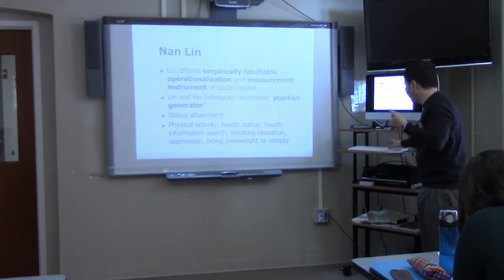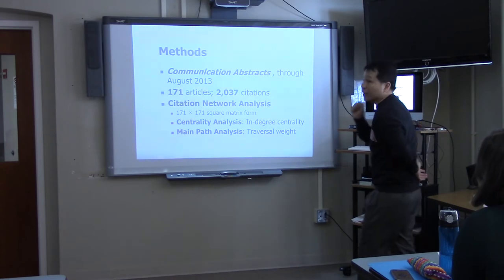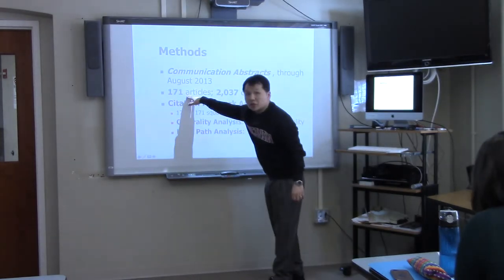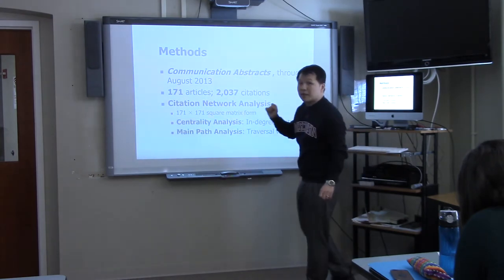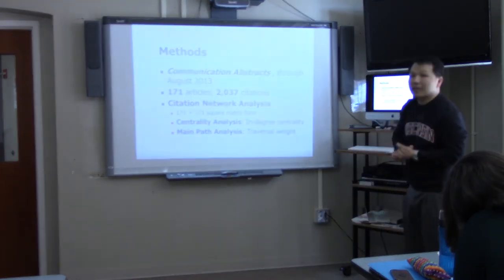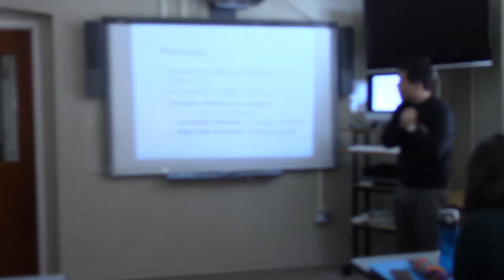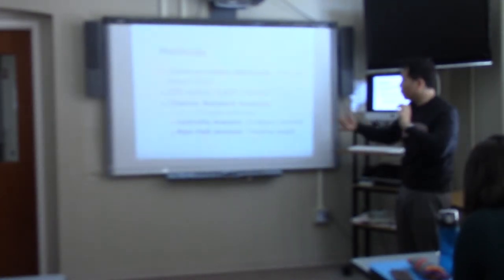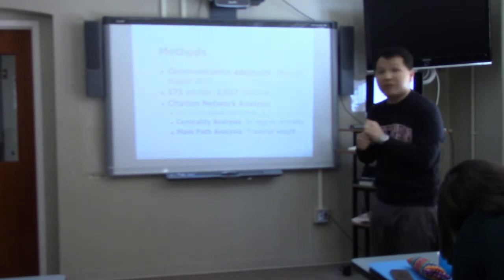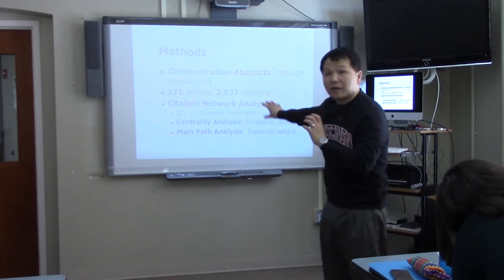To identify relevant communication literature, I looked at Communication Abstracts and found 171 articles, including one book and three book chapters, with 2,037 in-text citations. I examined how 171 articles cited each other, creating a 171 by 171 square matrix. I then conducted two analyses: one is in-degree centrality, and the second is main-path analysis.